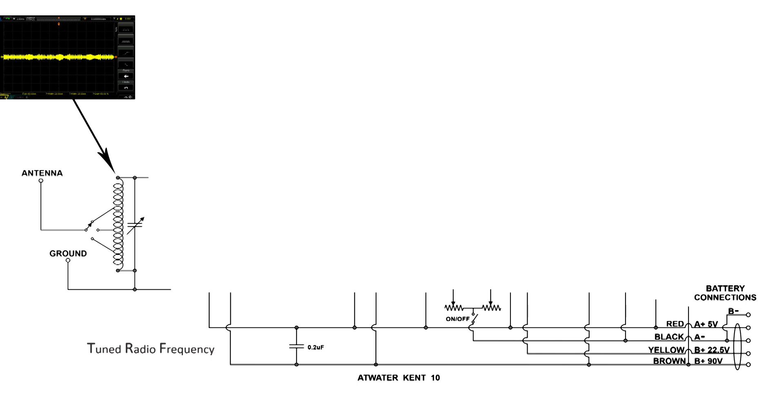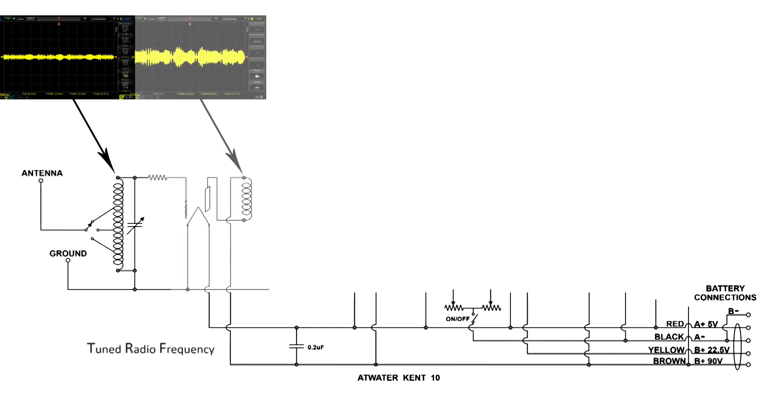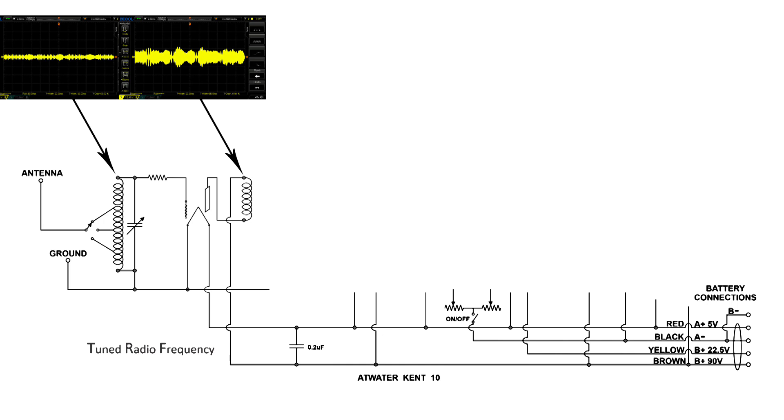Now here's the first tank circuit. We have an antenna and a ground, and this is the actual signal from the radio station. This signal goes over to the grid of the first tube and gets amplified.